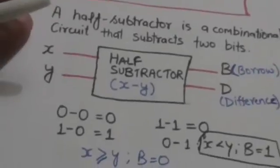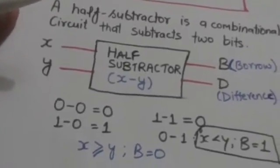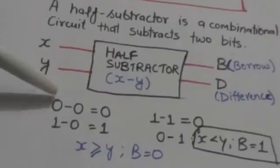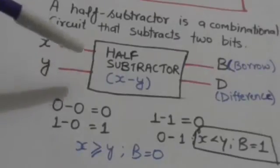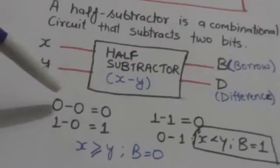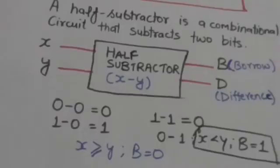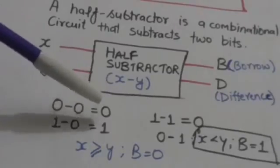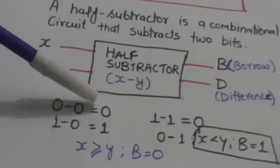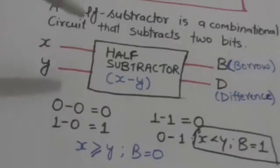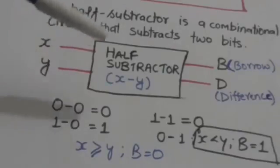Suppose the value of X is zero and the value of Y is also zero, then the result would be zero because zero minus zero equals zero. Here the value of D, the difference bit, would be zero, and since no borrow has been taken from a higher significant stage, the value of B will also be zero.